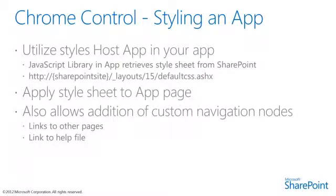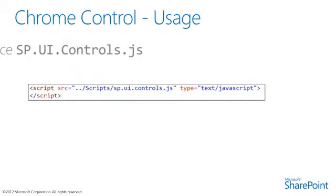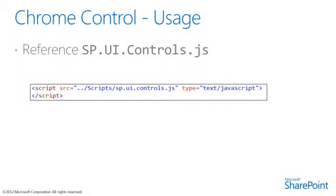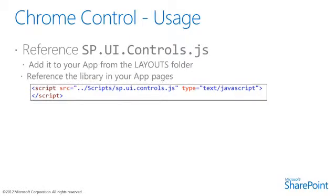Something that's different in the app development world compared to traditional SharePoint development is that some things we're used to, like a navigation infrastructure, really isn't present in the app. We'll need to provide that — we can provide our own navigation, or we can do so by using the Chrome Control. We use the Chrome Control by adding a reference to the sp.ui.controls.js JavaScript file that is present in the layouts folder in the SharePoint site, referenced the same way you would reference any other JavaScript library. You can either include a copy of the script, or you can reference the script from the layouts folder.